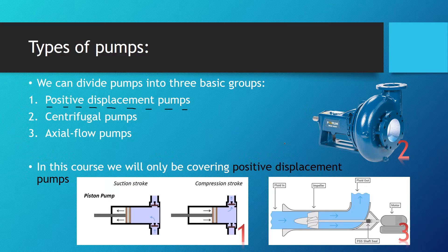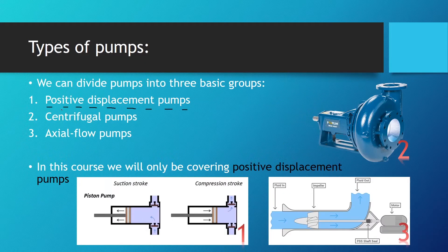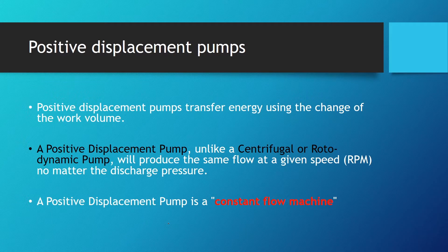A positive displacement pump transfers energy using the change of the work volume. As you can see here, the piston pump changes the work volume — it reciprocates left and right and that way it pumps fluid. A positive displacement pump, unlike a centrifugal or rotodynamic pump, will produce the same flow at a given speed regardless of discharge pressure.